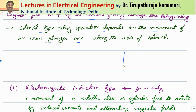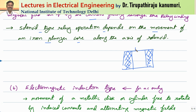The solenoid type relay operation depends on the movement of the iron plunger or core along the axis of the solenoid. In the solenoid type, there is a coil — the cross section is hollow inside, and an iron bar is placed inside. This iron bar is connected through a small bar to the contacts. Whenever the coil is energized, it produces a magnetic field that attracts this plunger inside, causing the contacts to close.